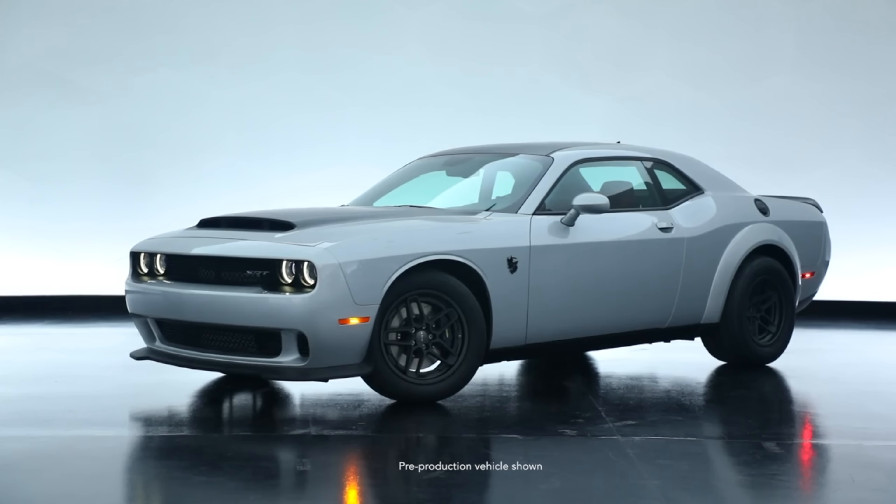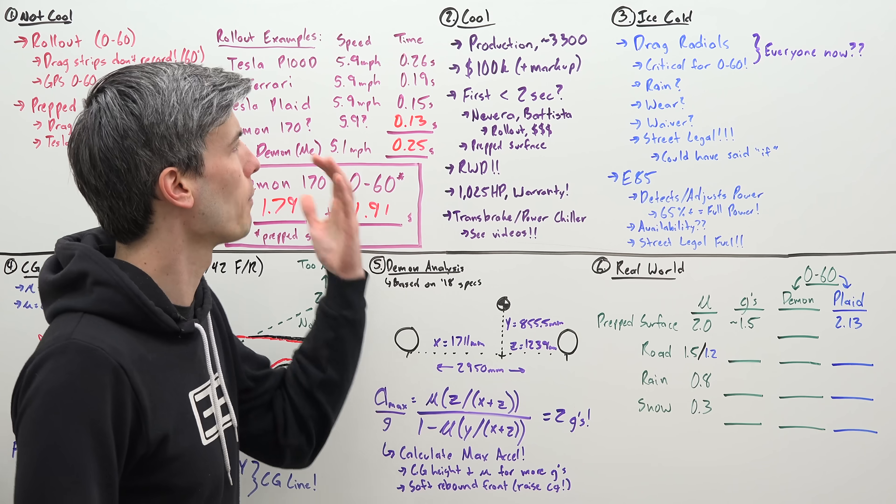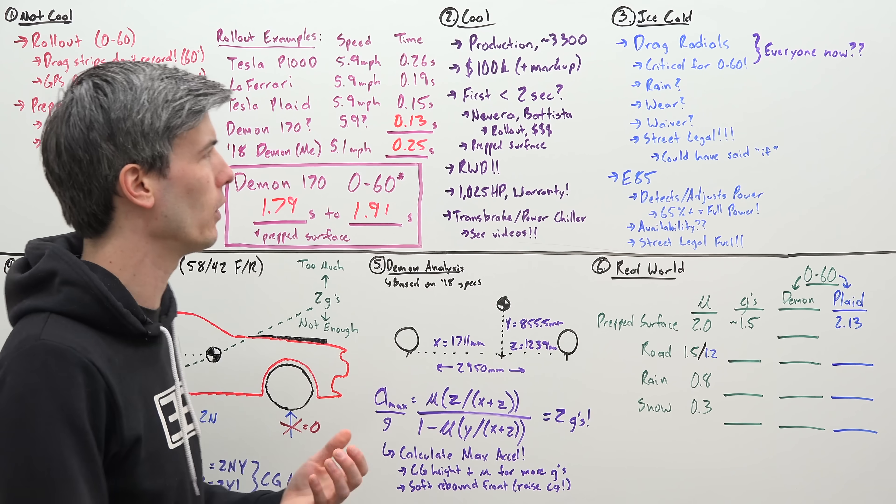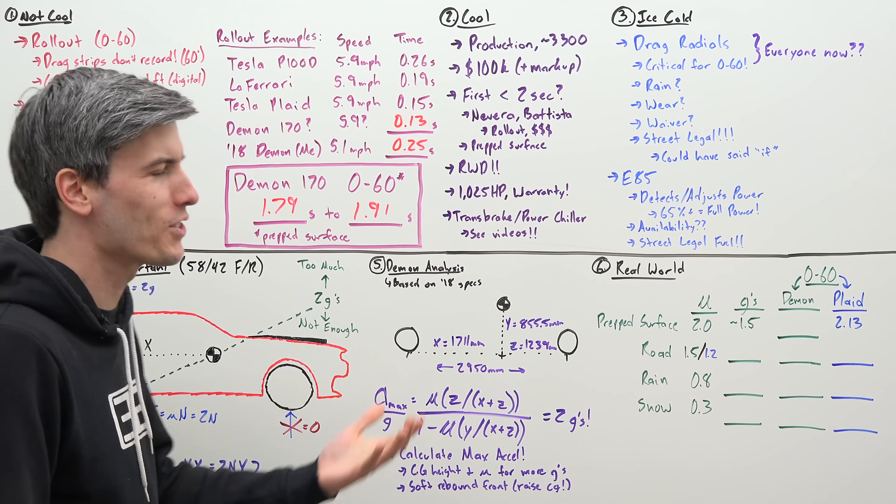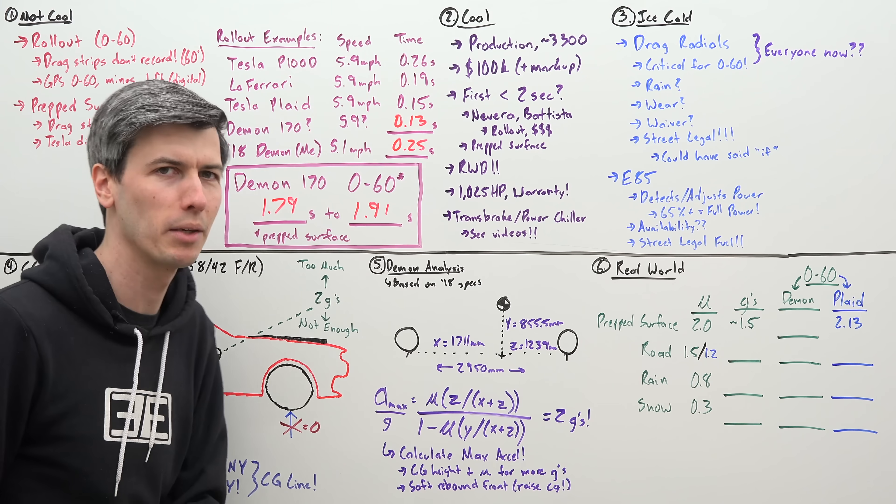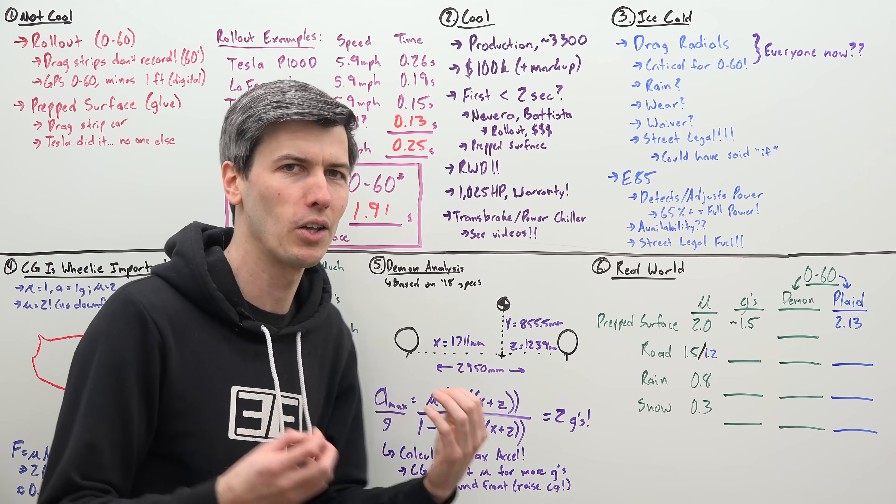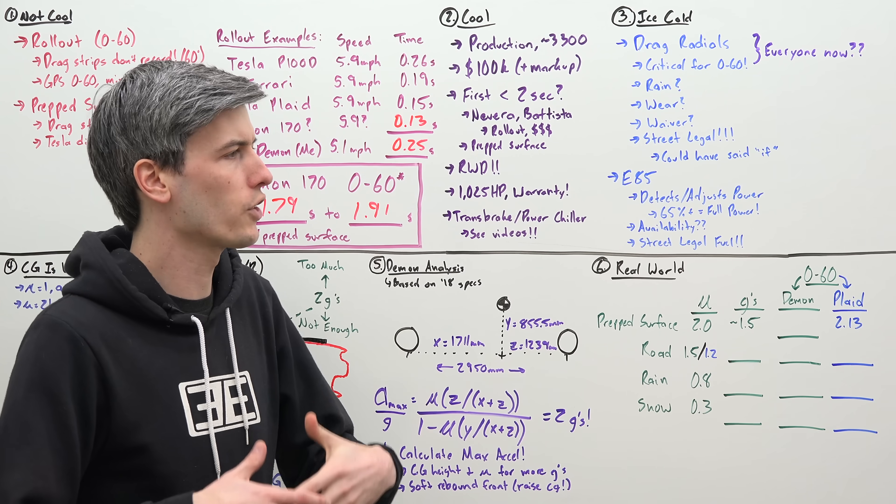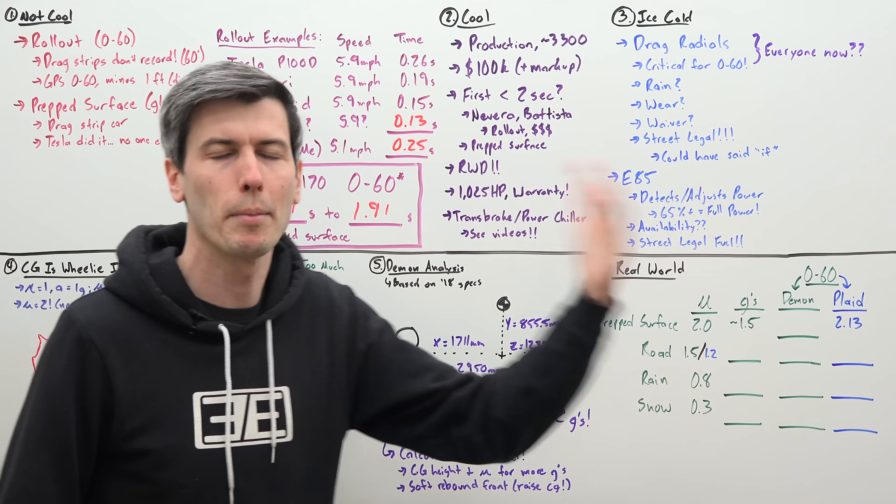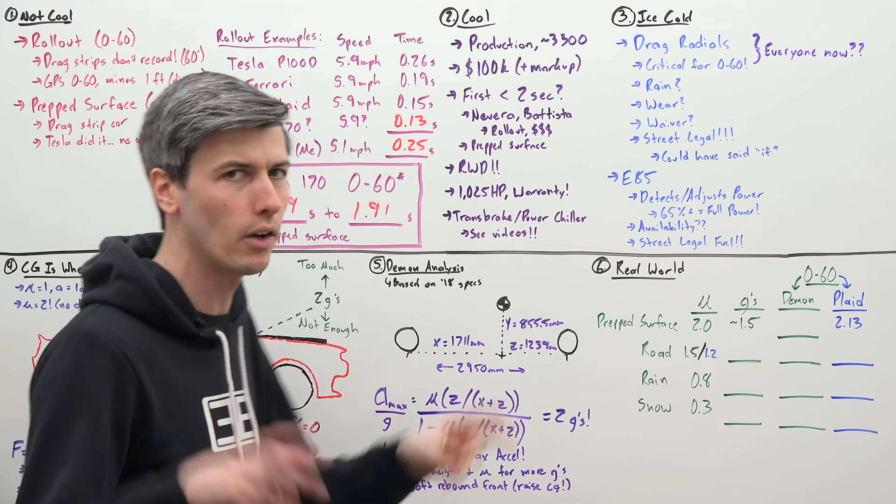So what else is cool about the Demon? Well, this is a genuine production car. I think that's awesome. There's going to be up to 3,300 of these built. And this is a car that costs $100,000. Now, yeah, as the name implies, there's probably going to be a $170,000 markup, but it's a $100,000 vehicle. This isn't just some extraordinary thing like the Rimac Nivera or the Pininfarina Batista, where it's multiple millions of dollars.